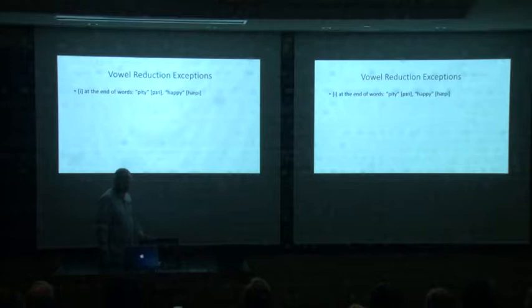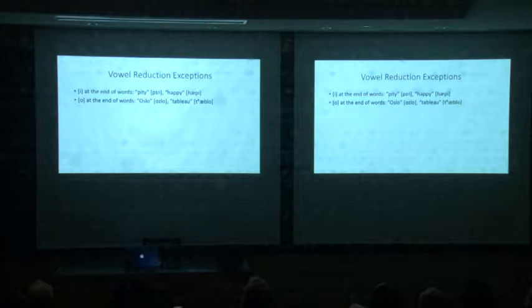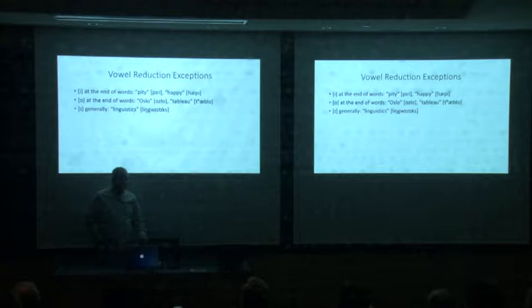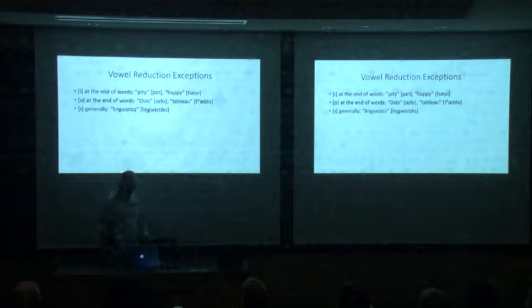There are exceptions to vowel reduction which make it problematic in some cases. The 'E' sound at the end of words like 'pity' or 'happy' doesn't reduce — it always stays 'E' in English. 'O' at the end of words like 'Oslo' or 'Tableau' stays 'O' and doesn't reduce, even in unstressed syllables. The 'I' sound generally stays as 'I' — in linguistics, the last two vowels are both 'I', one stressed and one unstressed. R-colored vowels generally don't change whether the syllable is stressed or unstressed either.